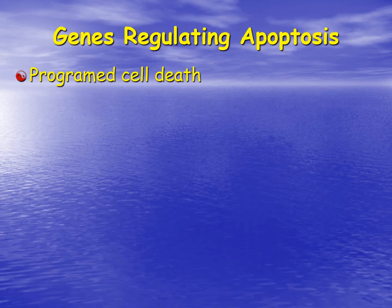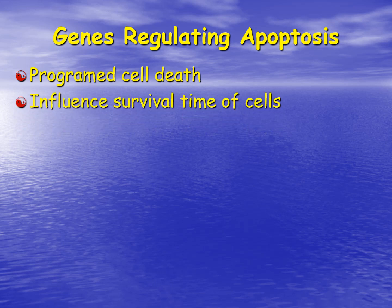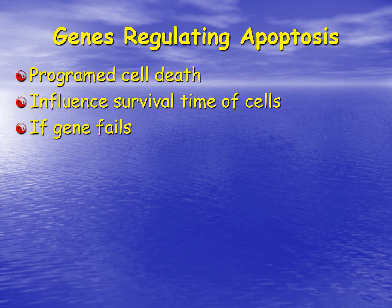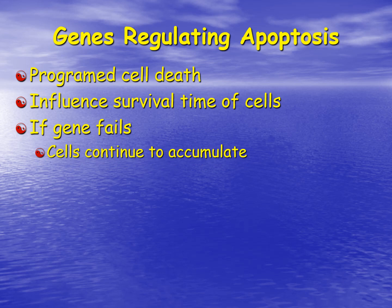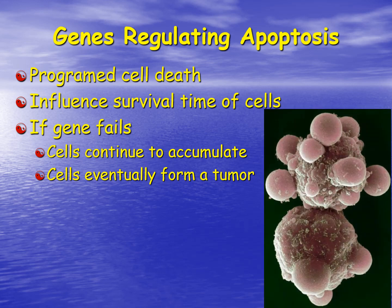All of our cells undergo apoptosis — we have programmed cellular death within our genetics, which influences the survival time of all cells. If these regulatory genes fail, cells can continue to accumulate. The problem is that they can accumulate mutations, and if this occurs, these cells can eventually form tumors.